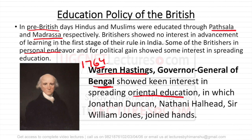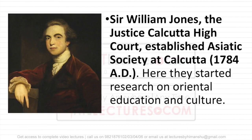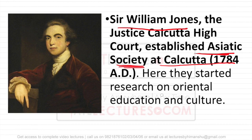Oriental Education means the original traditional education of India. Jonathan Duncan, Nathalie, and Sir William Jones helped him in pursuing this kind of education. Sir William Jones was the Justice of Calcutta High Court. He established the Asiatic Society at Calcutta in 1784 AD. He started research on Oriental Education, meaning the basic local education, the culture of India, the way they teach — he mainly emphasised on these things.